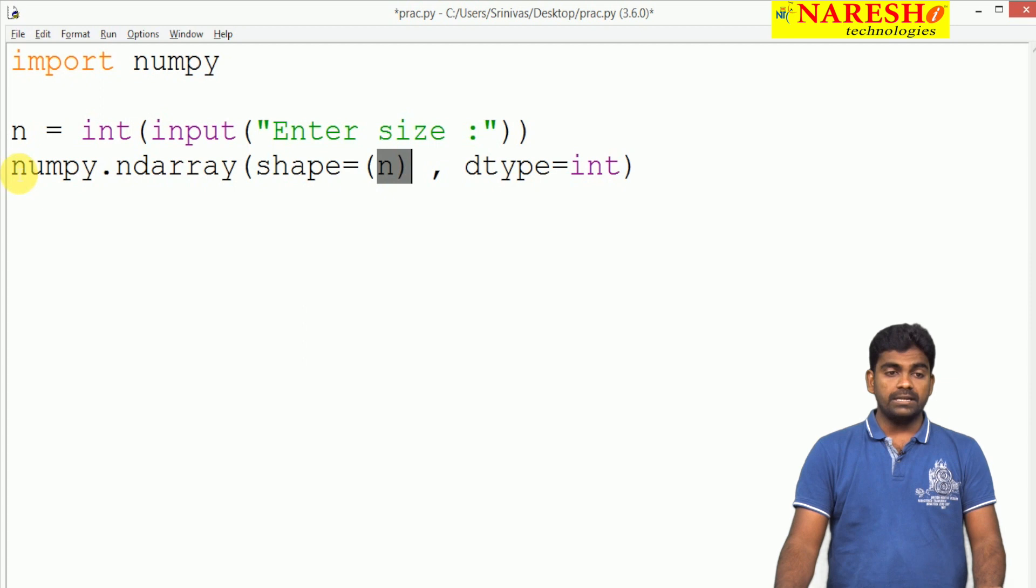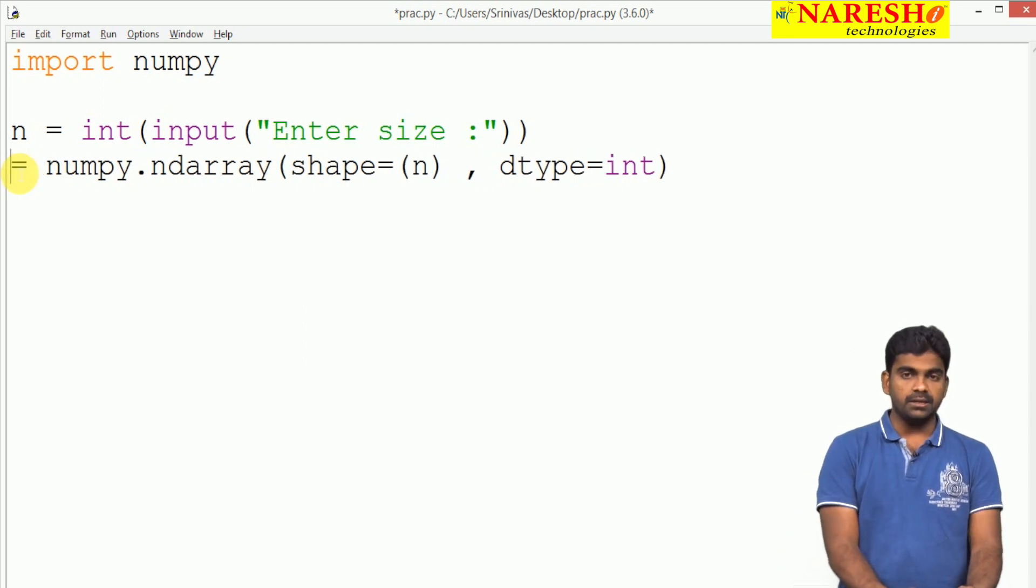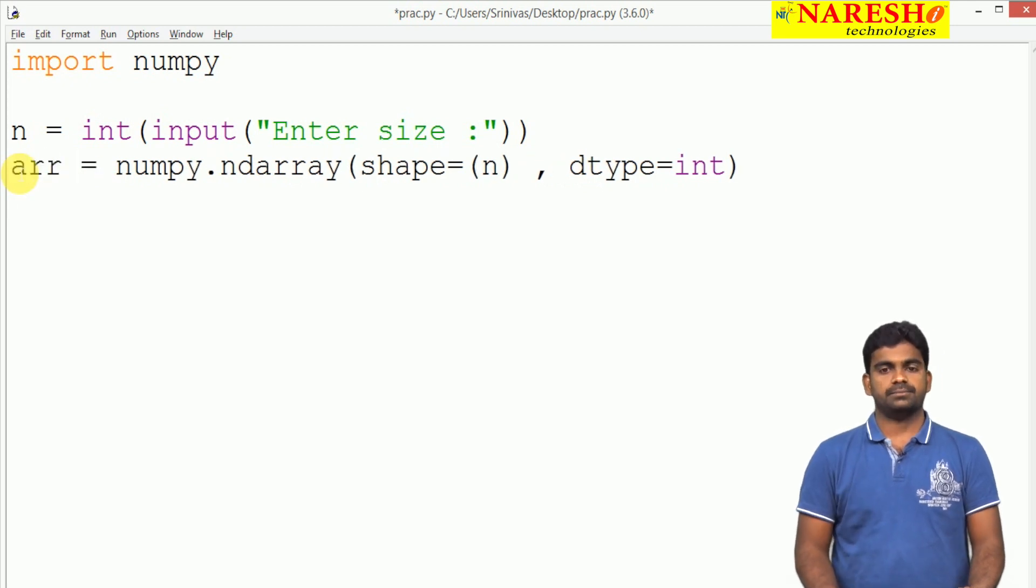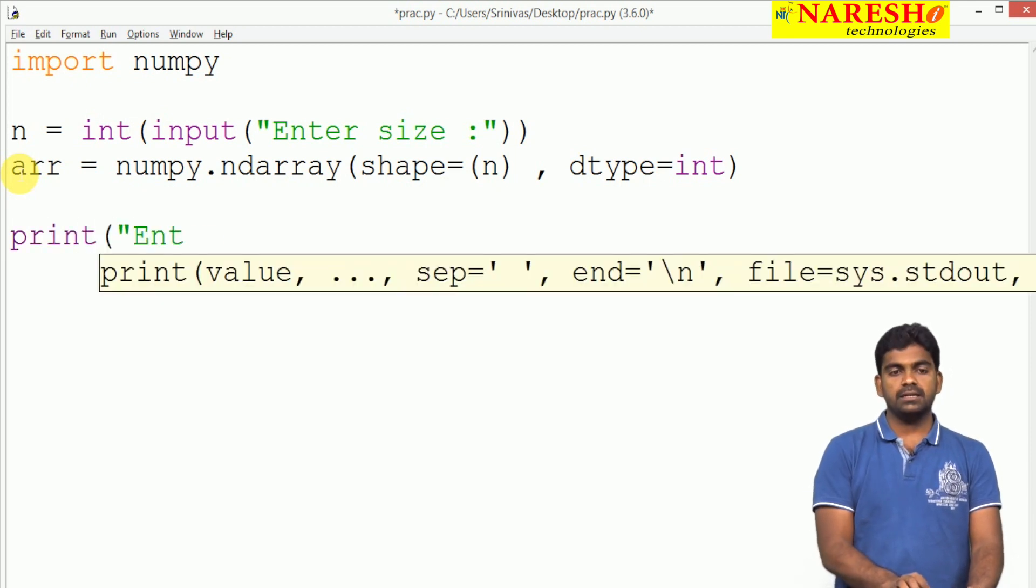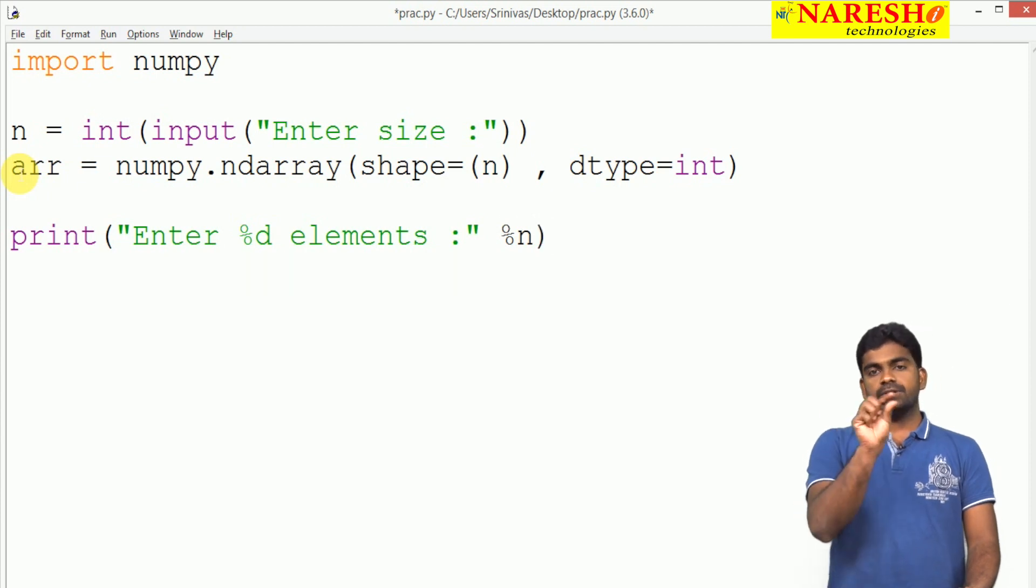Once array construction is done, we're collecting it into a variable called arr. Now we are reading. We already mentioned size clearly as n, so we ask 'enter n elements' - it will give the message clearly to enter n elements.